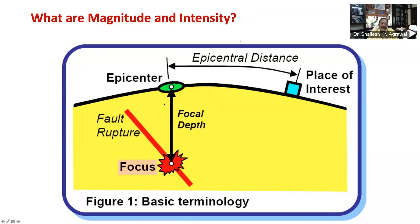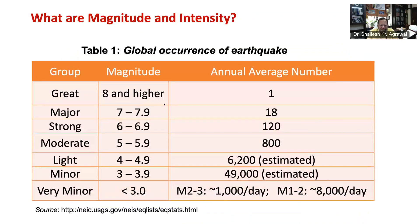We often hear that an earthquake comes with a certain magnitude on the Richter scale, as well as an earthquake intensity. Magnitude is a quantitative measure of the actual size of an earthquake, and it was invented by Professor Charles Richter — that is why the magnitude scale is also known as the Richter scale.